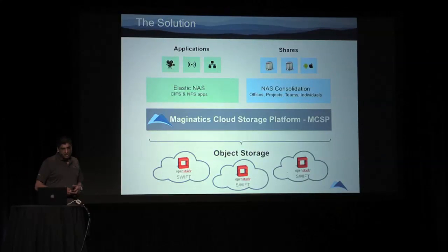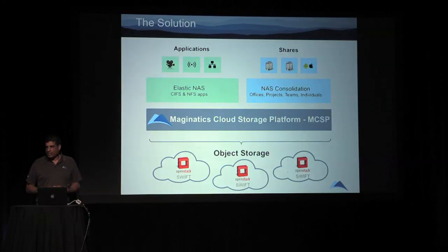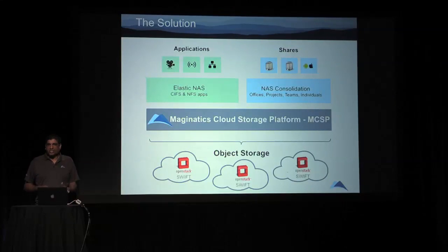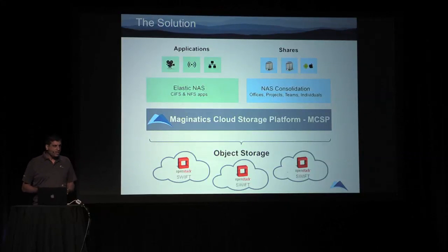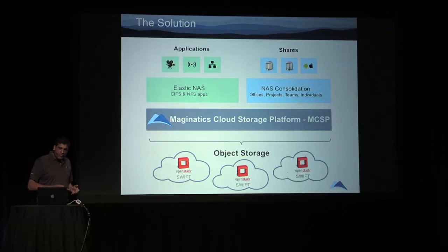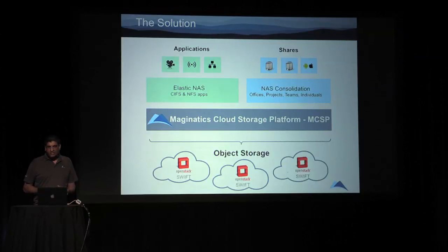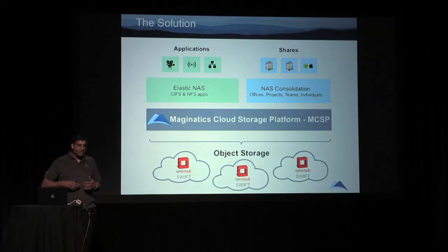Another use case we see quite often is NAS consolidation. A lot of our customers have a very widely distributed NAS infrastructure — so many filers. It's not just about server sprawl; there's also filer sprawl. How do you manage hundreds and thousands of small NAS filers? There's a desire to collapse that onto a smaller footprint. We're able to use an object store and present data to an endpoint user while still maintaining an acceptable level of service, so the end user experience feels like they're using data locally.